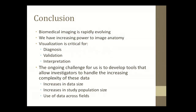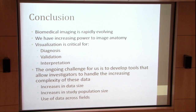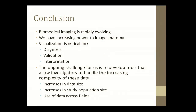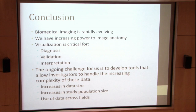A lot of what I've shown you today shows very clearly just how rapidly biomedical imaging has been evolving, and how we have new types of data emerging frequently. We have an increased power to make images of anatomy where we can resolve more clearly the structure of the brain and other organs — what we see now is vastly improved over what we saw 10 or 20 years ago. Visualization is extremely critical in all of these in a number of areas, such as diagnosis, validation, interpretation, and discovery. The biggest ongoing challenge for us as developers is to create tools that will allow investigators to handle this increasing complexity in terms of data size, increases in study population, and studies that bridge across fields such as neuroimaging genetics where we want to look at the effects of genetics on brain structure. Thank you for your attention.